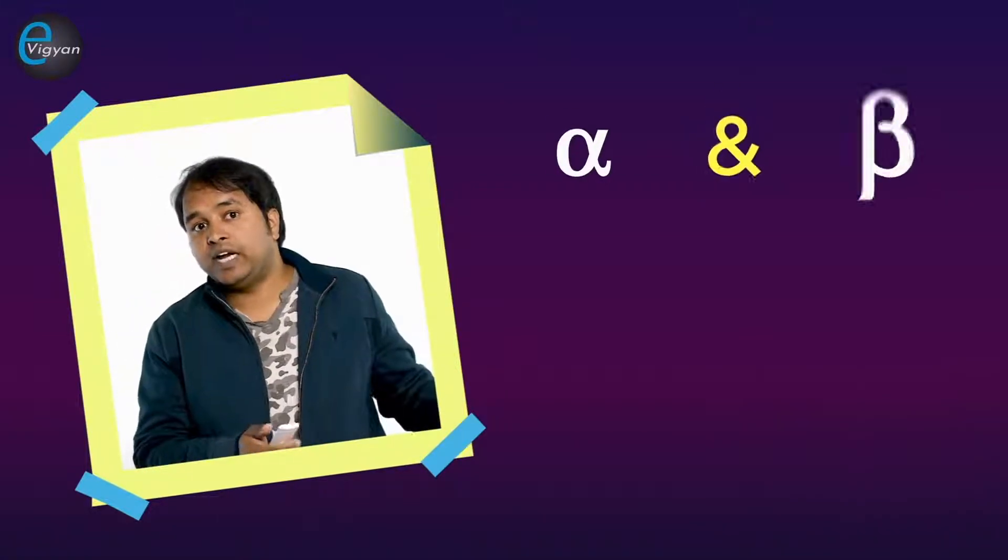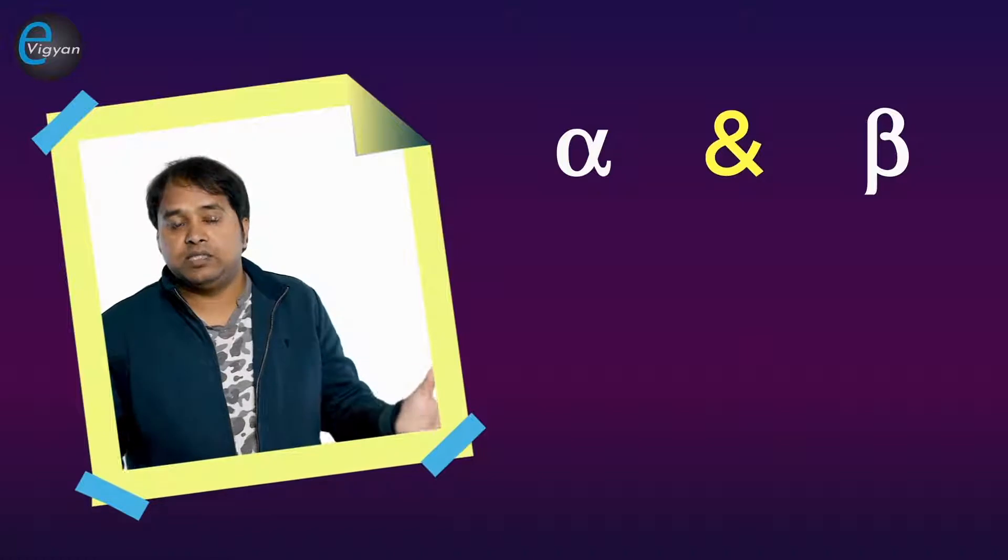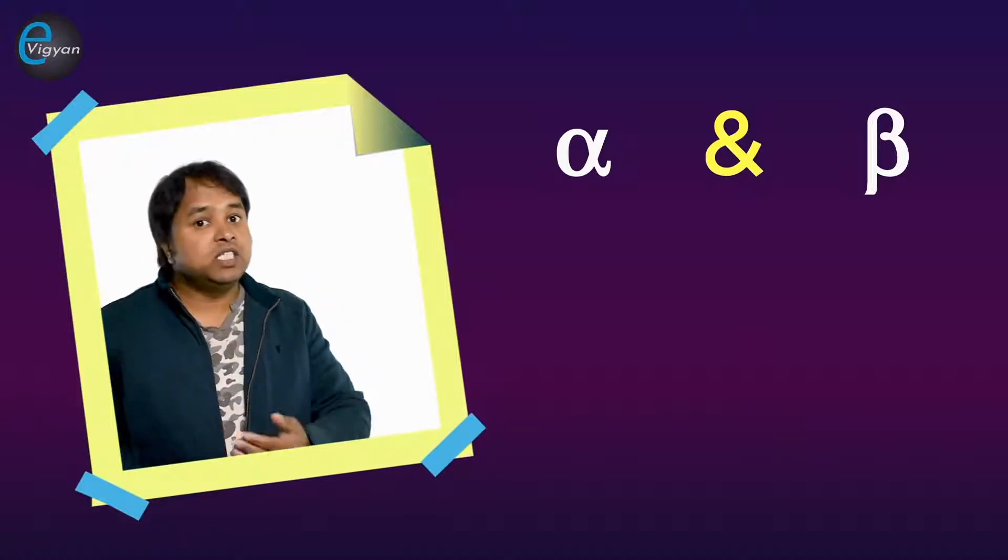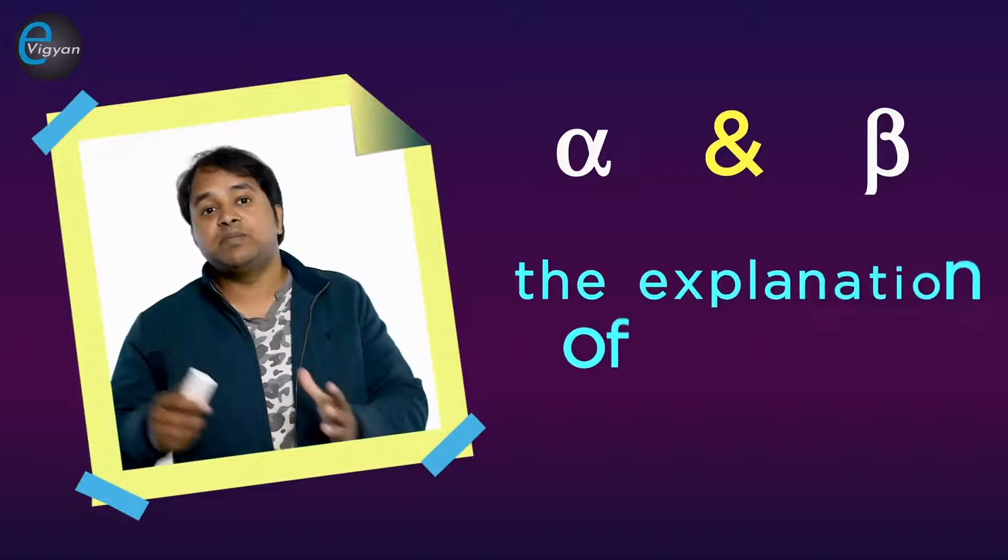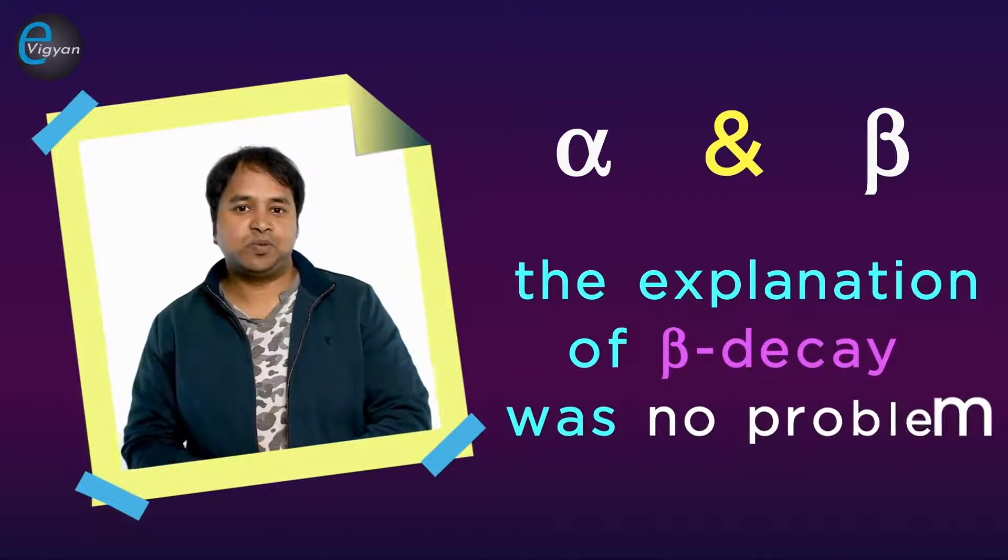The proton-electron hypothesis seemed to be consistent with the emission of alpha and beta particles by atoms of radioactive substances. Since it was assumed that the nucleus contained electrons, the explanation of beta decay was no problem.